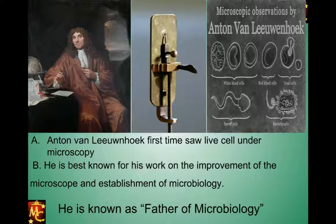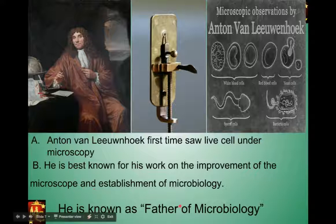Later, Antonie van Leeuwenhoek was the first person to actually see living cells under his microscope. He was a great microscopist and constructed several microscopes. The middle image shown is his own microscope which he used to see many kinds of cells. Antonie van Leeuwenhoek is also known as the father of microbiology, or Sukshmjeev Bigyan. Using his own built microscopes, he observed many important cellular organisms and is best known for his work on the improvement of the microscope and the establishment of microbiology.